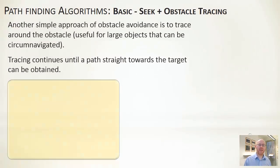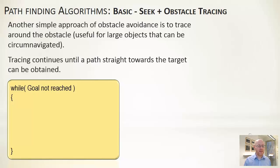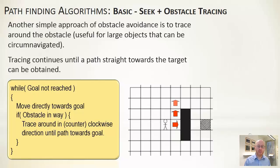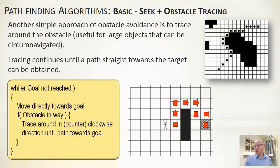A more sophisticated version is basic seek with obstacle tracing. Here, if there's an obstacle in the way, instead of randomly going left or right, we pick either clockwise or counterclockwise and trace our way around the object until we get around it. This works better than random sidestepping because with a large object, random sidestepping could waste a lot of time. This simple algorithm works reasonably well for large outdoor environments with a few large obstacles.